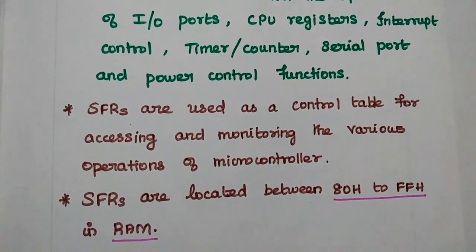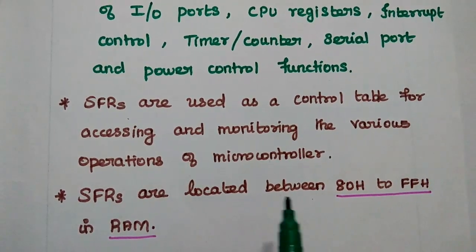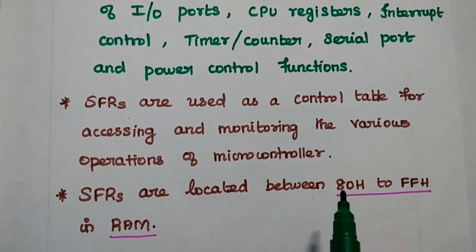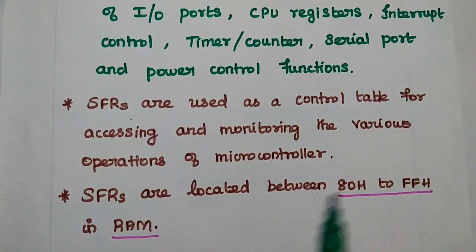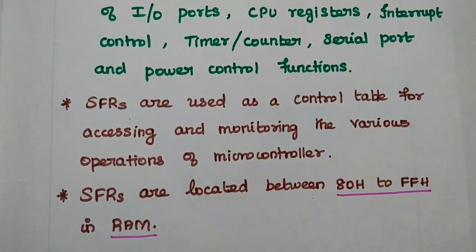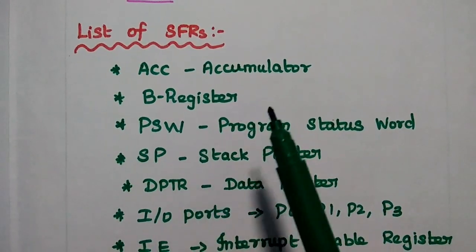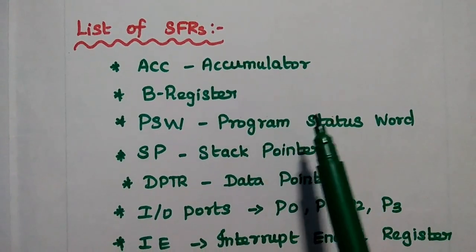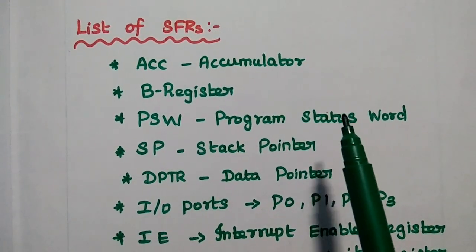The special function registers are located between 80H to FFH in random access memory. Here is the list of SFRs used in AT51 microcontroller.